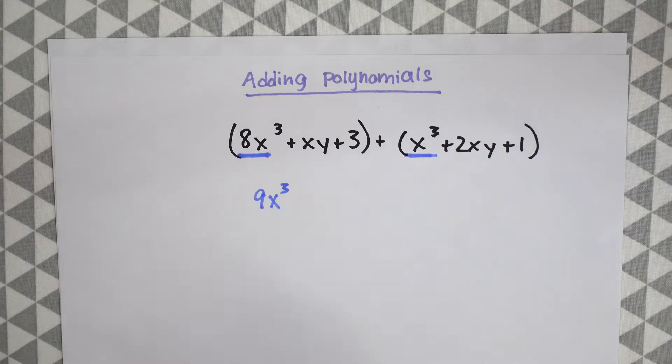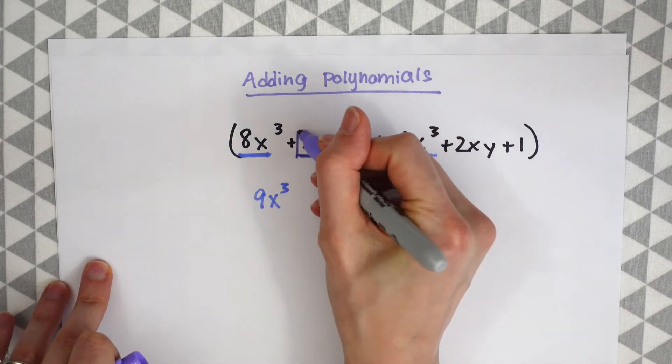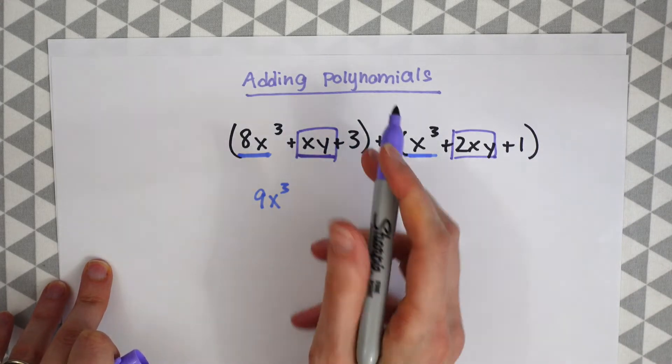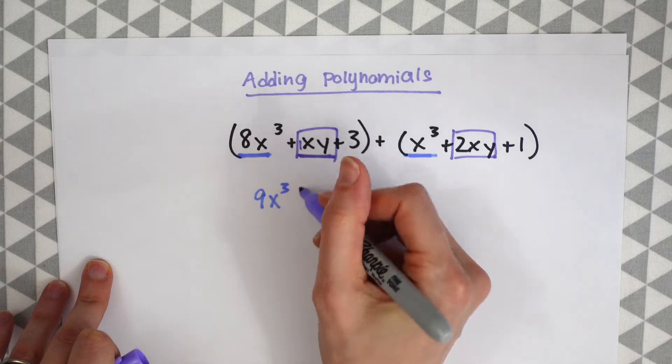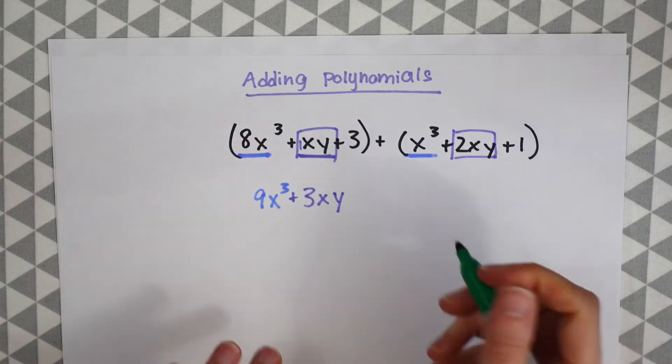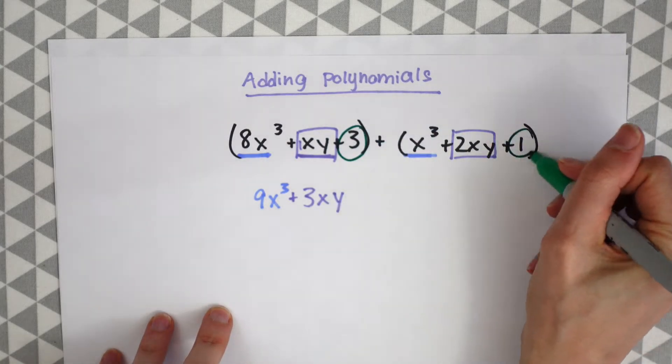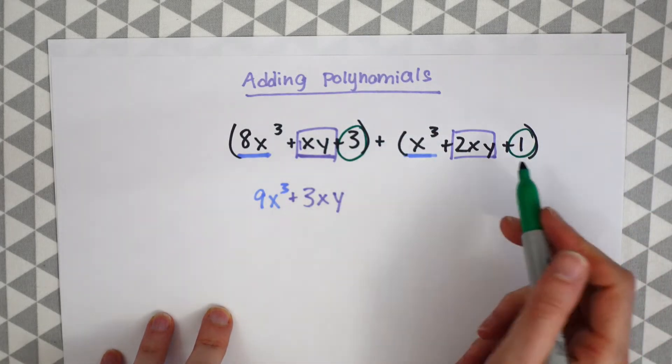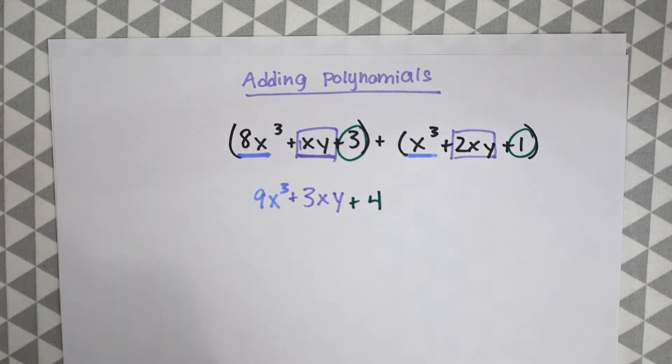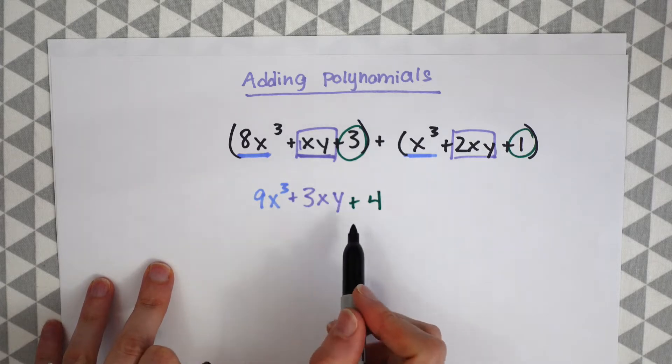Now if we look for xy, our next term, we'll see that we have 2xy on this side. So we're just going to add 1, there's like a little 1 here, plus 2 which gives us 3xy. And for our last term we just have this 3 here, a whole number, and over here we have a 1. So 3 plus 1 is just going to give us 4. So this gives us our full expression here, 9x cubed plus 3xy plus 4.